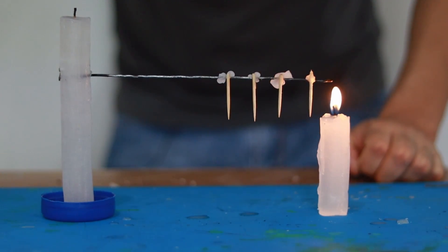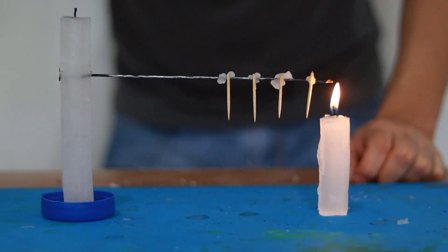This is because the heat is conducted through the wire and when it reaches the points where the toothpicks are glued with wax, the wax melts and then the toothpicks fall off.